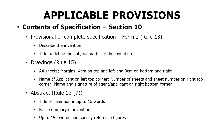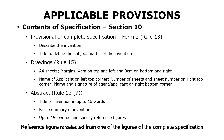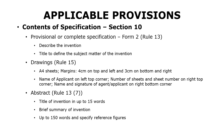Along with the complete specification you also need to submit an abstract under Rule 13(7). It says that the abstract should include a title of the invention in up to 15 words, a brief summary of the invention limited to a maximum of 150 words, and also specify a reference figure.